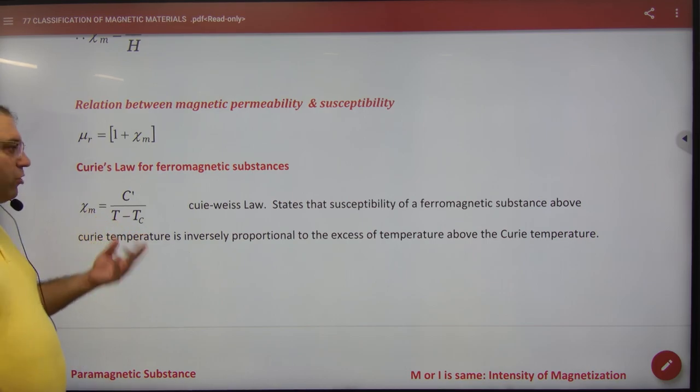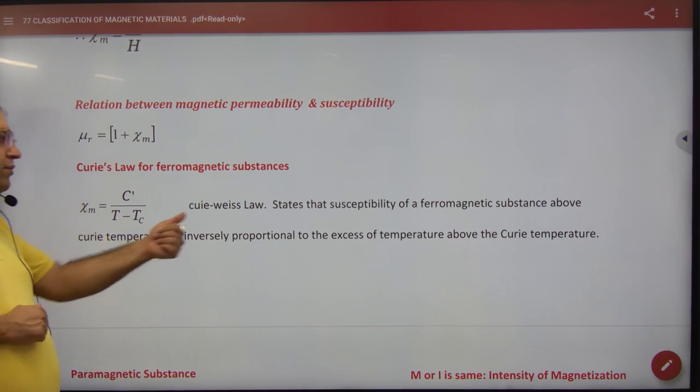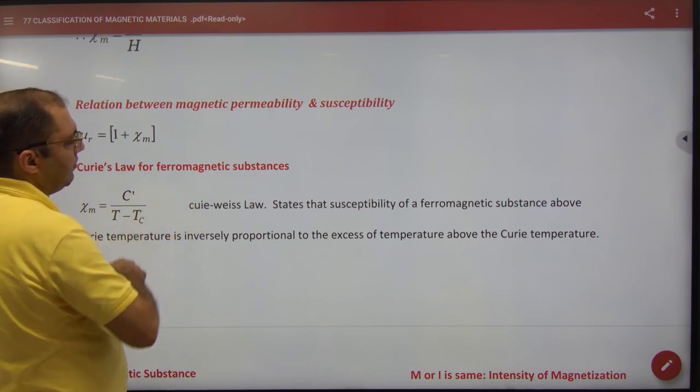So, Curie's Law is written in some books. Chi is Curie's constant upon T minus Tc. Tc is critical temperature. So this is Curie's Weiss Law.